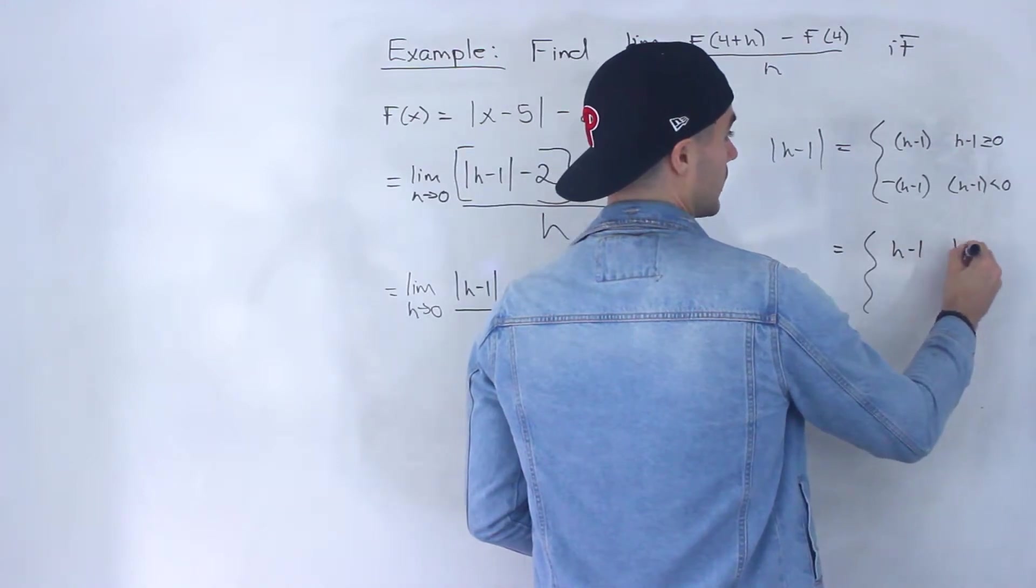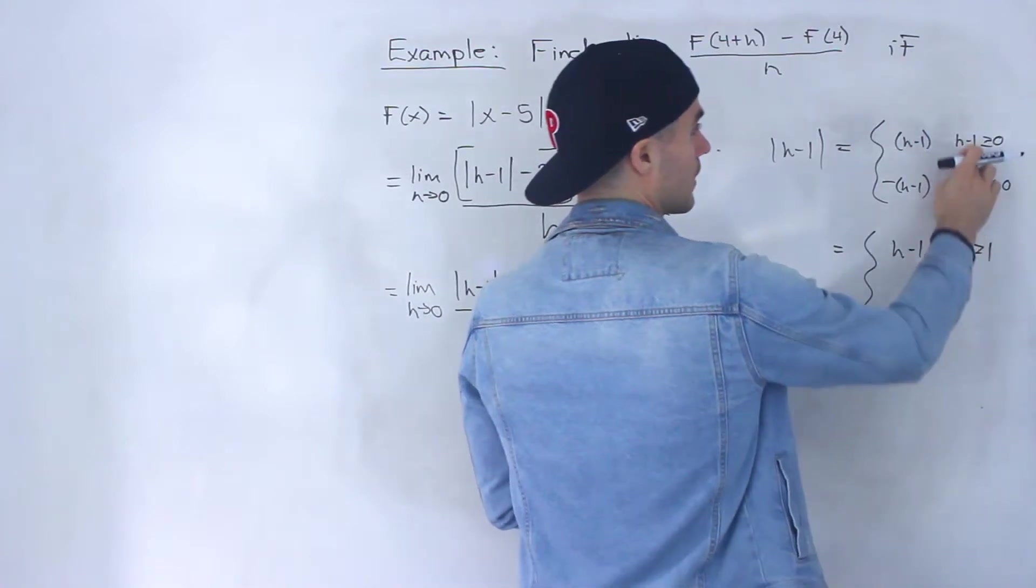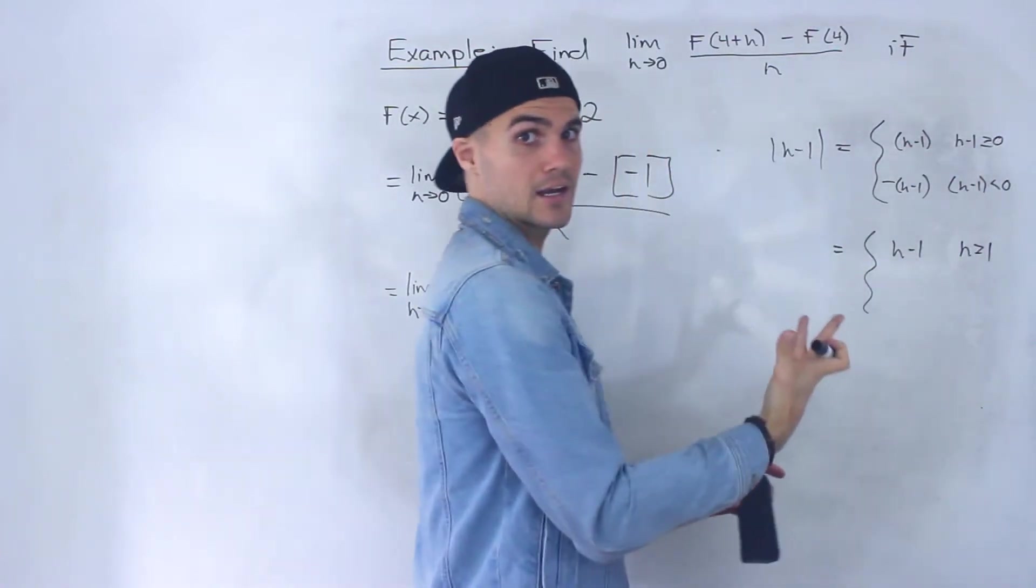So to simplify this, we would have (h-1) when h is greater than or equal to 1, if we isolate for h in that inequality there.